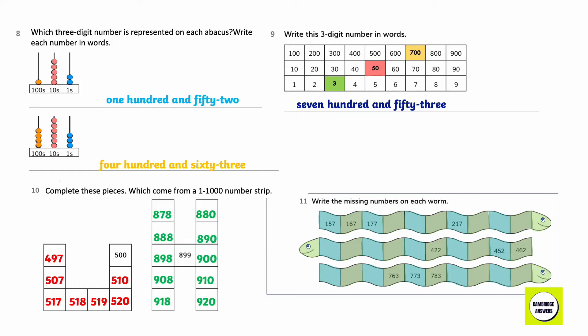Write the missing numbers on each worm. 157, 167, 177. When we add 10 in 177 we get 187, 187, 197, 207, 217, 227, 237, 247.